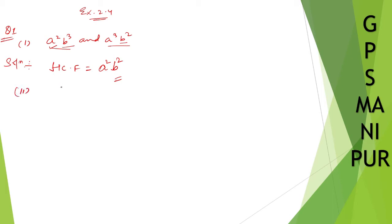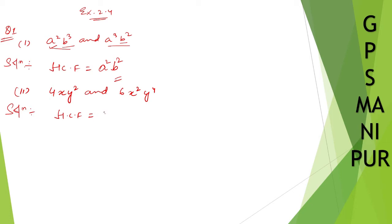Roman number two: we have 4xy² and 6x²y⁴. For the HCF, take common from 4 and 6 — we can take 2. From x and x², we can take 1x common. From y² and y⁴, we can take y² common. So the HCF is 2xy².